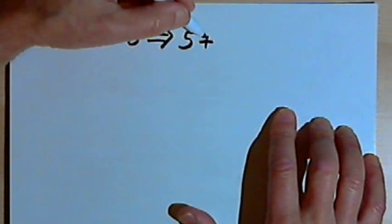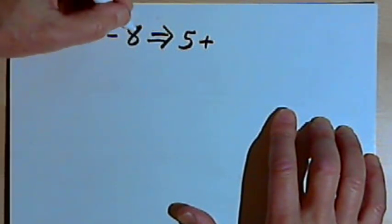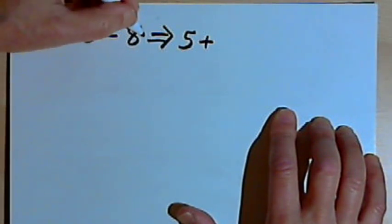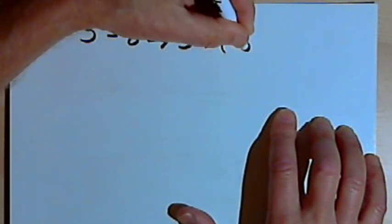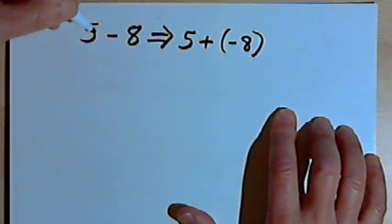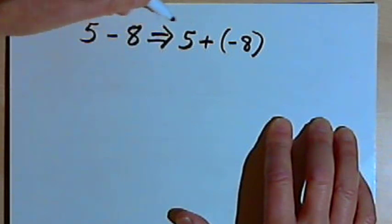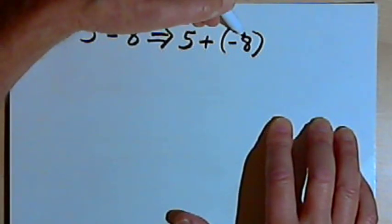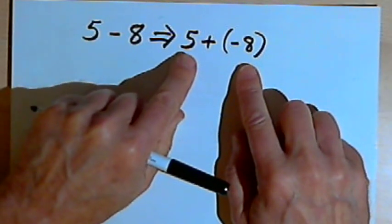Now I want to compensate for that change. Here where I have an 8 — the number I was taking away from 5 — I'm going to change that 8 into its opposite. I'm going to change that into a negative 8. So I've gone from subtraction to its opposite addition, and I've gone from positive 8 to its opposite negative 8. Now I've got an addition problem: 5 plus negative 8.